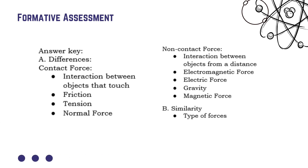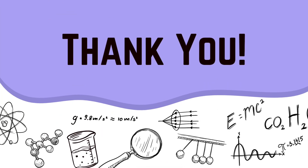In the Venn diagram: contact forces involve interaction between objects that touch — including friction, tension, and normal force. Non-contact forces involve interaction between objects from a distance — including electromagnetic force, electric force, gravity, and magnetic force. Their similarity is that they are all types of forces. Thank you so much for joining me — I hope the meaning of non-contact forces is now clear and you can distinguish the difference between contact and non-contact forces.